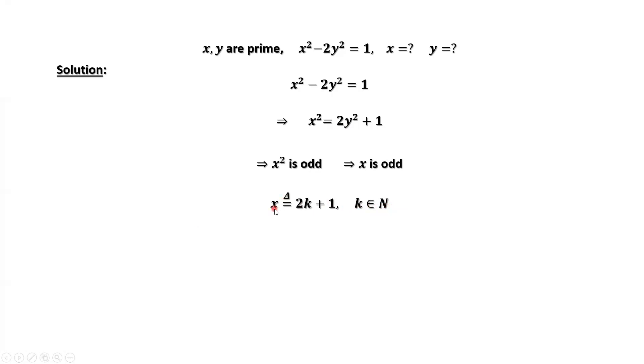Replace x here by 2k plus 1. We have (2k plus 1) squared equals 2y squared plus 1. Expand the left-hand side. We have 4k squared plus 4k plus 1 equals 2y squared plus 1.